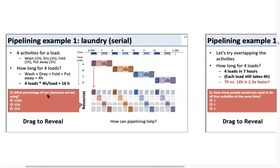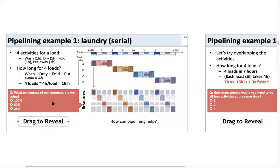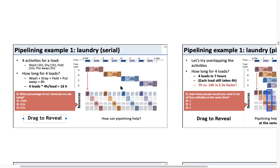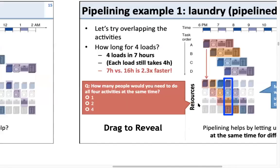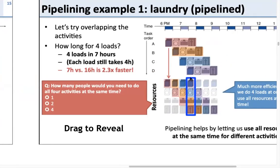There are some homework examples in the slides — you can try to solve them and then drag to reveal the answer. At one point in time, all stages in an ideal pipeline would be under full utilization. You ideally don't want any hardware resource sitting idle, so you want to fill up the pipeline so everyone is working at any given point in time.